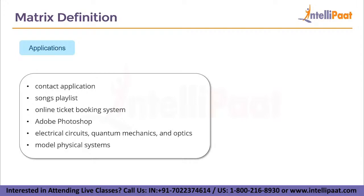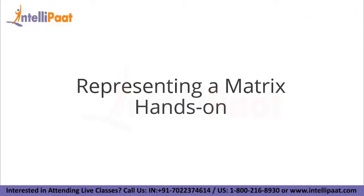Adobe Photoshop uses matrices to process linear transformations to render images. A square matrix can represent a linear transformation of a geometrical object. In physics-related applications, matrices are used in the study of electrical circuits, quantum mechanics, and optics. Finally, engineers use matrices to model physical systems and perform accurate calculations needed for complex mechanics.